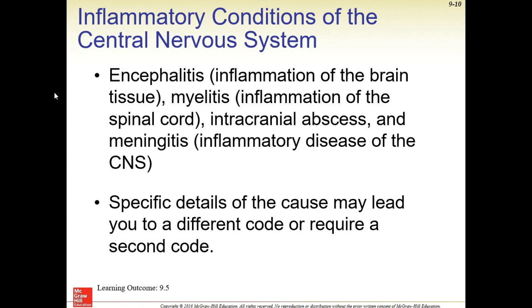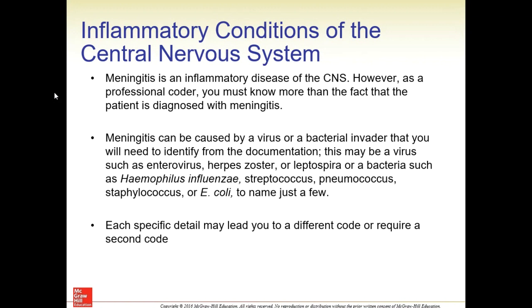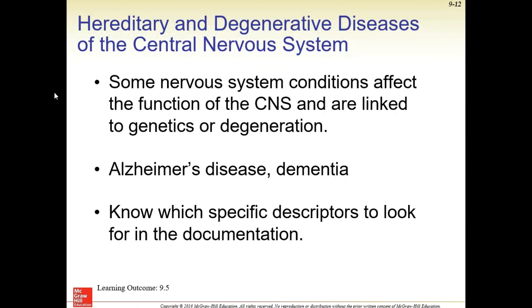Continuing on with conditions: encephalitis, inflammation of the brain tissue; myelitis, inflammation of the spinal cord; or intracranial abscess — different inflammatory diseases of the central nervous system. Specific details of the cause may lead you to a different code or require a second code. Meningitis is a good example — you must know more than just that the patient is diagnosed with meningitis. It's going to be caused by either a virus like enterovirus or herpes zoster, or a bacterial infection like E. coli, pneumococcus, or staphylococcus. We want to capture the cause — what is the infectious agent — because as we keep reiterating, as coders we are researchers.